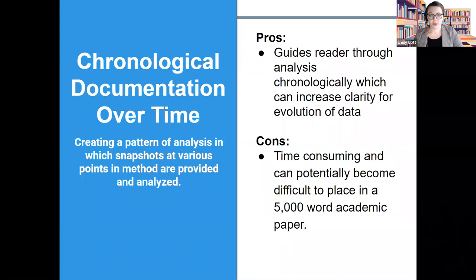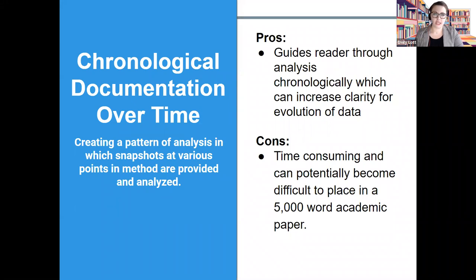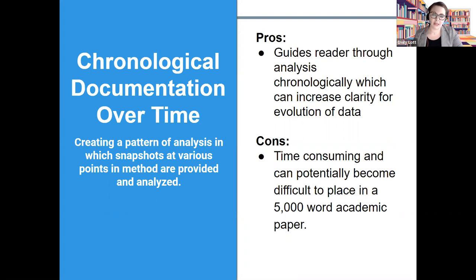If your research focuses around a time element — perhaps a growth-over-time study or repeated visits to a research site to measure change — you might consider analyzing your results chronologically. The pro is that it guides a reader through the analysis chronologically, which can increase clarity for the evolution of your data. However, there is a con: this is a time-consuming process that can potentially become very difficult to fit within a 5,000-word academic paper.